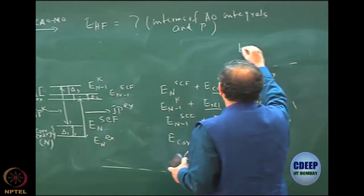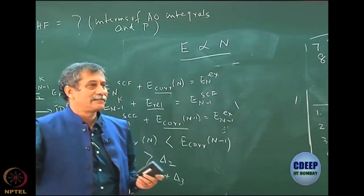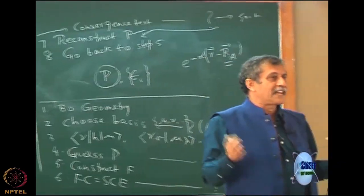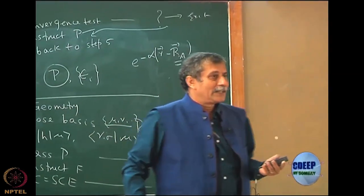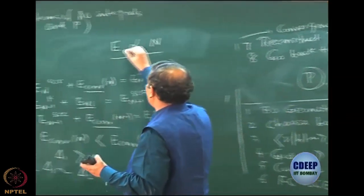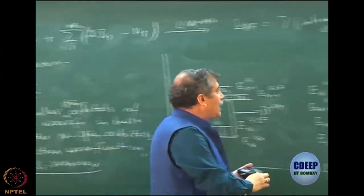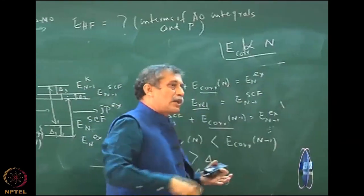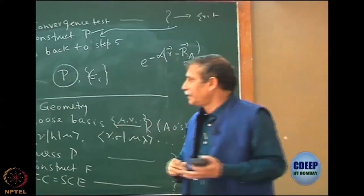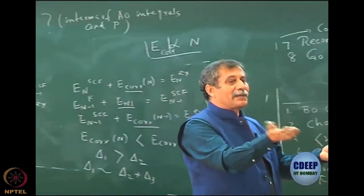There is a theorem which says that the dominant part of E is proportional to N — it is size extensive. The exact theories are size extensive, so correlation energy also becomes proportional to N. The modulus of E correlation is always proportional to N. That is the reason. How much is the relaxation — that is where the approximation will not be exact, but it will be pretty close.